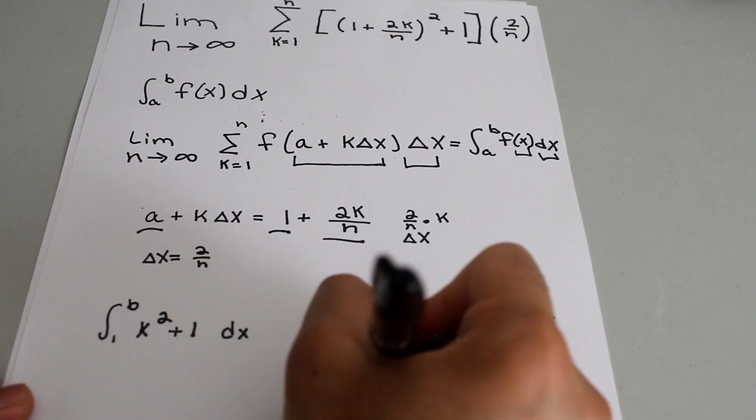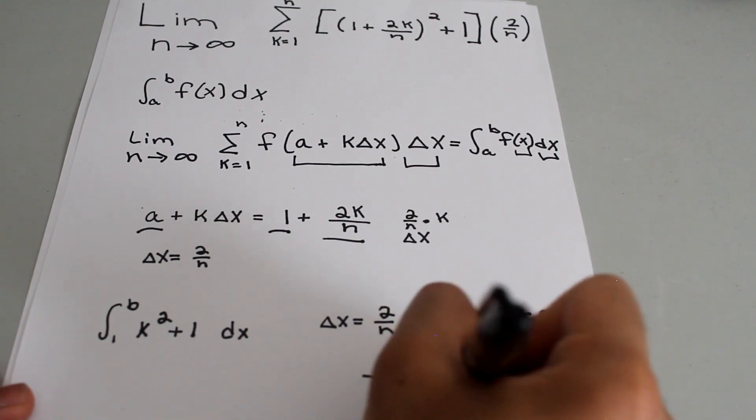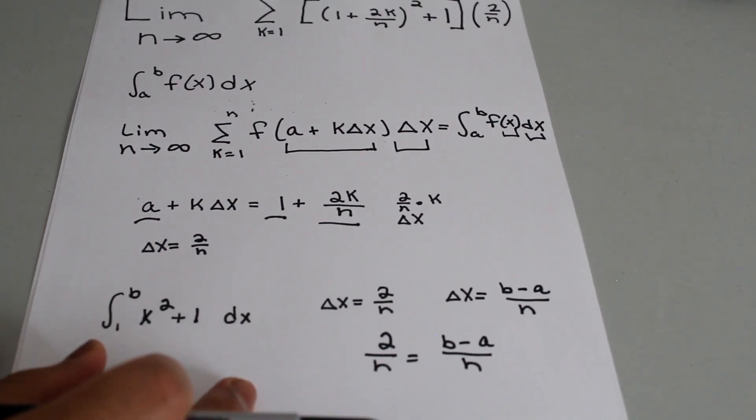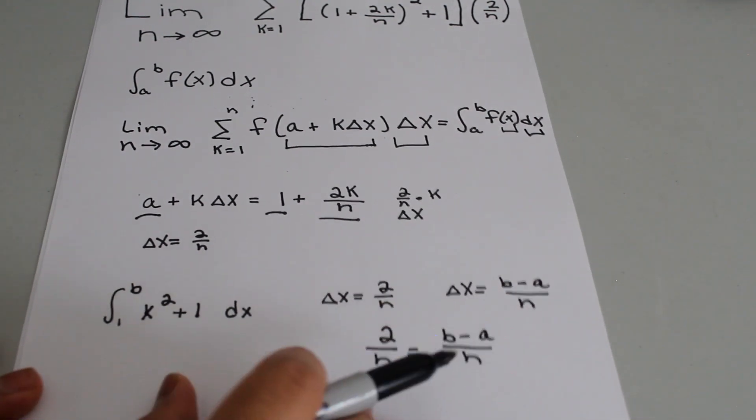we get 2 over n equals b minus a over n. Now since the denominators are the same, for these to be equal, the numerators must be the same.